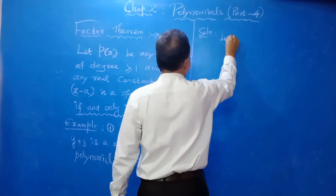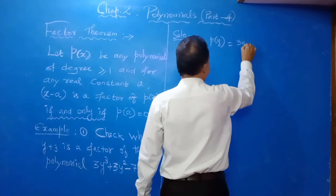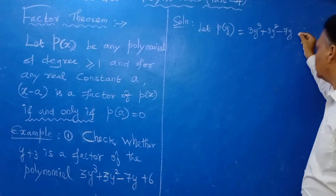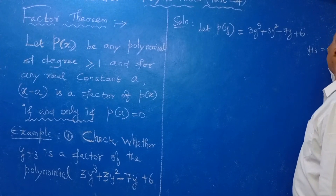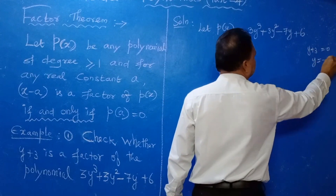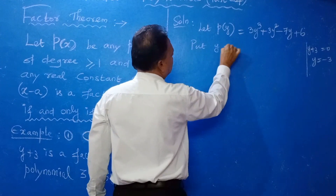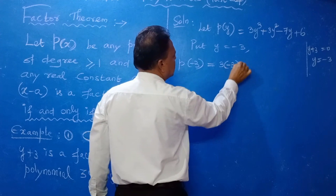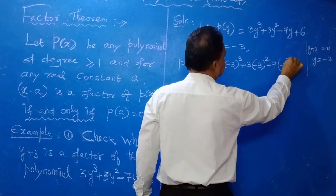Let P of Y equal to 3Y³ plus 3Y² minus 7Y plus 6. Now for the linear polynomial Y plus 3, set Y plus 3 equal to 0, so Y equals minus 3. Put Y equal to minus 3 into the polynomial to find P of minus 3: that gives 3 into (minus 3)³ plus 3 into (minus 3)² minus 7 into (minus 3) plus 6.